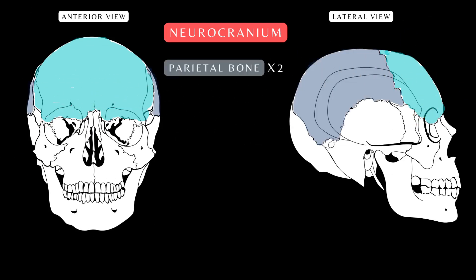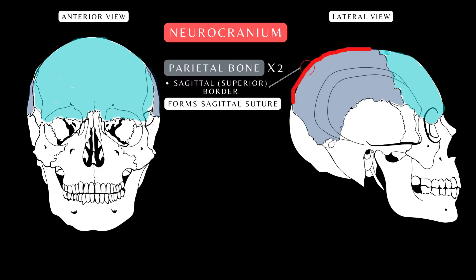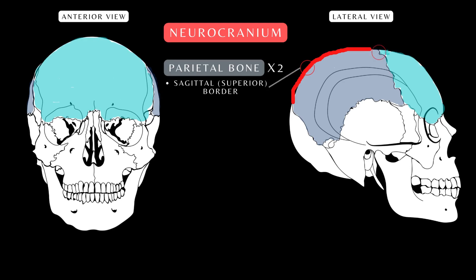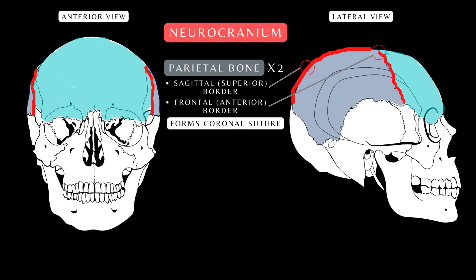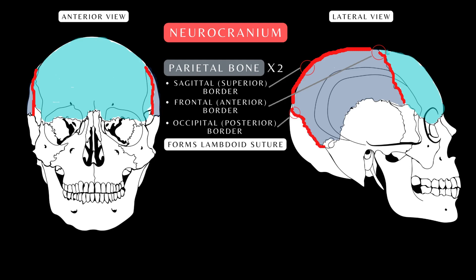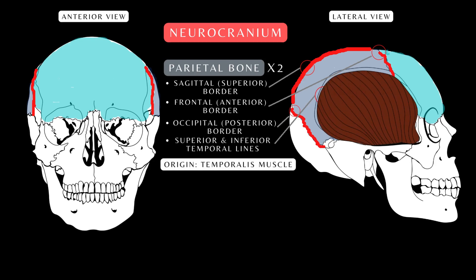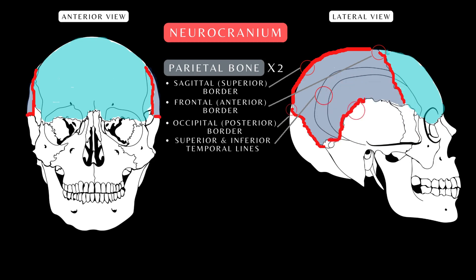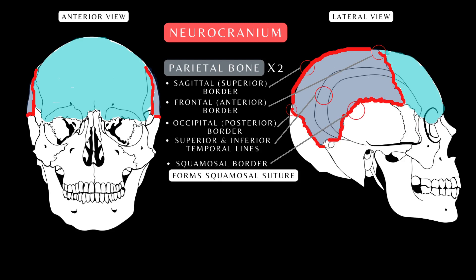The parietal bone is a paired bone that forms the sides and roof of the cranium. Features include: the sagittal or superior border — both parietal bones fuse together to form a fibrous joint called the sagittal suture; anteriorly, the frontal or anterior border fuses with the frontal bone to form the coronal suture; posteriorly, the occipital or posterior border fuses with the occipital bone to form the lambdoid suture. The superior and inferior temporal lines, seen along the lateral surface of the cranium, are the origin of the temporalis muscle. The squamous border is where both parietal and temporal bones meet to form the squamosal suture. Inferiorly is the mastoid angle.